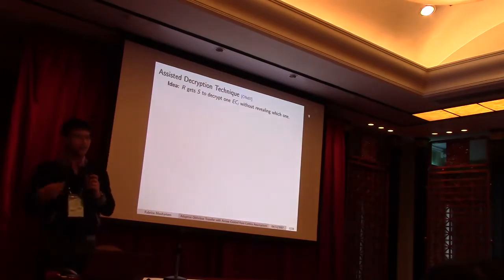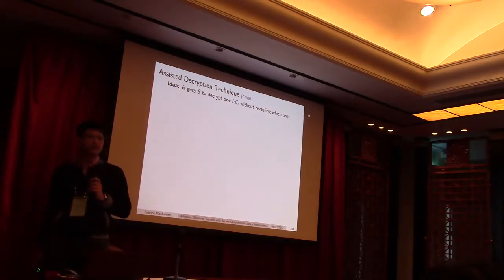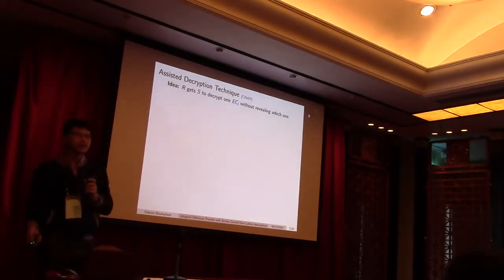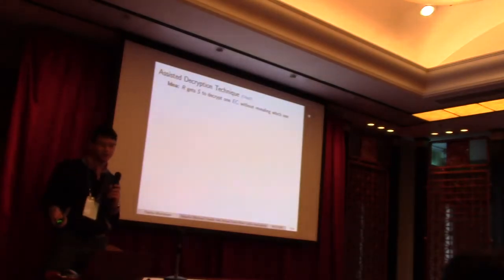So, basically, the difference with the indistinguishability-based security model is that instead of just comparing the views of the adversary, we will replace the adversary in an ideal world by an ideal functionality, and what we want is that the view of the environment remains the same in both settings, which means that the adversary cannot do more than what the functionality allows it to do.